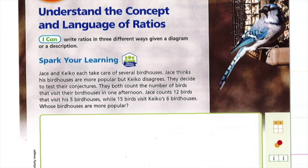The Spark Your Learning says Jace and Kiko each care for several birdhouses. Jace thinks his birdhouses are more popular, but Kiko disagrees. They decide to test their conjunctures. They both count the number of birds that visit their birdhouses one afternoon. Jace counts 12 birds that visit his five birdhouses, while 15 birds visit Kiko's six birdhouses. Whose birdhouses are more popular? I want you to pause and see what you can figure out. Do some exploring and see if you can decide whose birdhouses are more popular and then hit play.